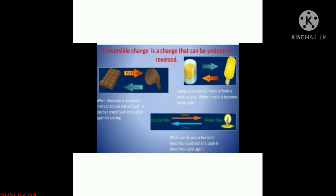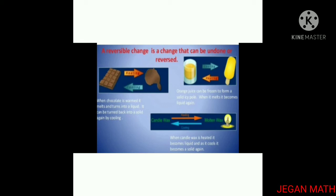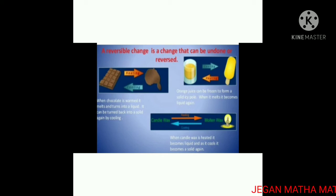Second example: orange juice can be frozen to form a solid ice. When it melts, it becomes liquid again. Third example: when candle wax is heated, it becomes liquid, and when it cools, it becomes a solid again.